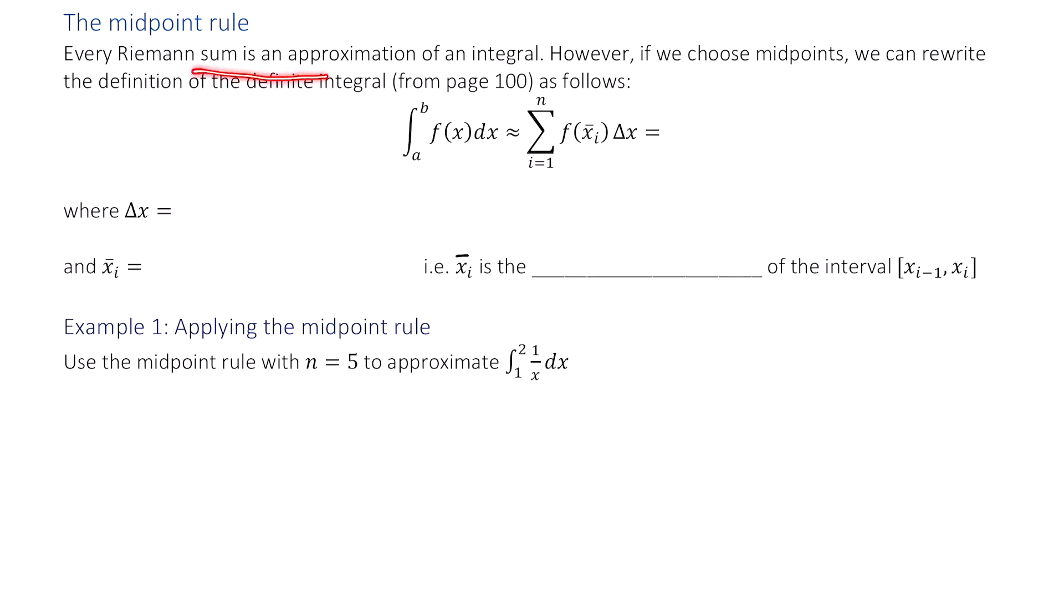Every Riemann sum is an approximation of an integral. However, if we choose midpoints, we can rewrite the definition of the definite integral. I'm going to cross this out, since I don't remember what page it is from the current notes that you're using. We can write it out as follows...